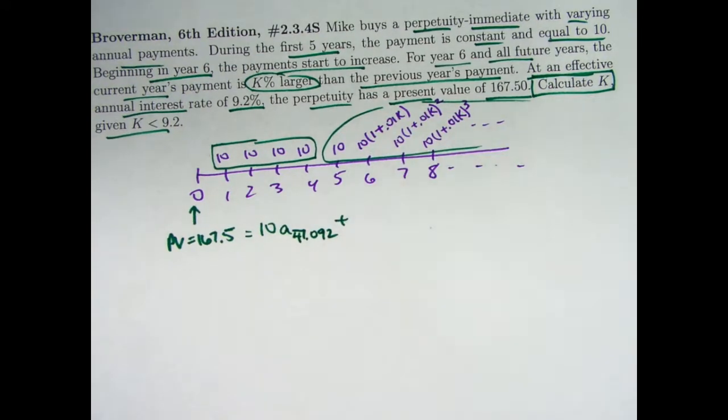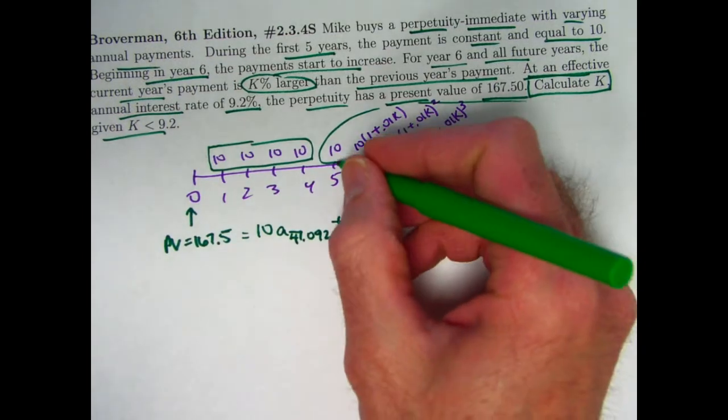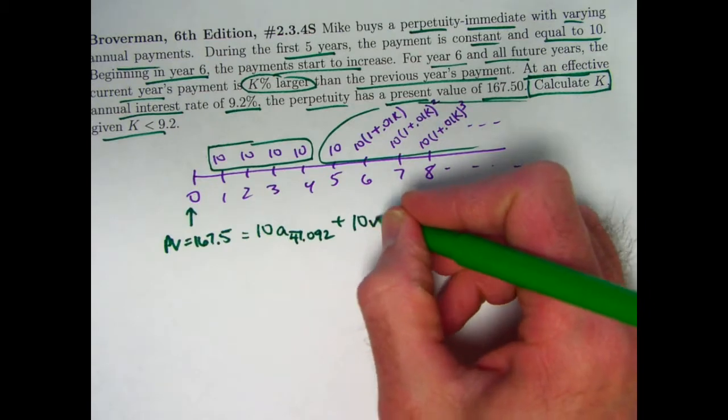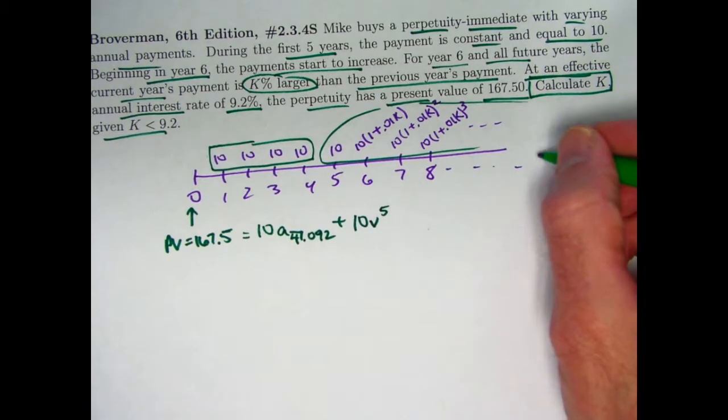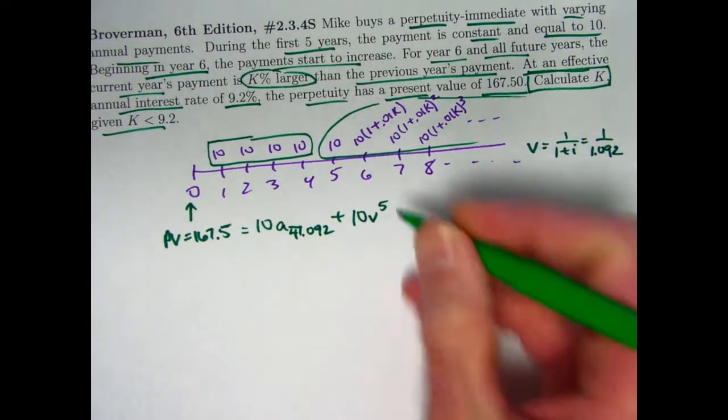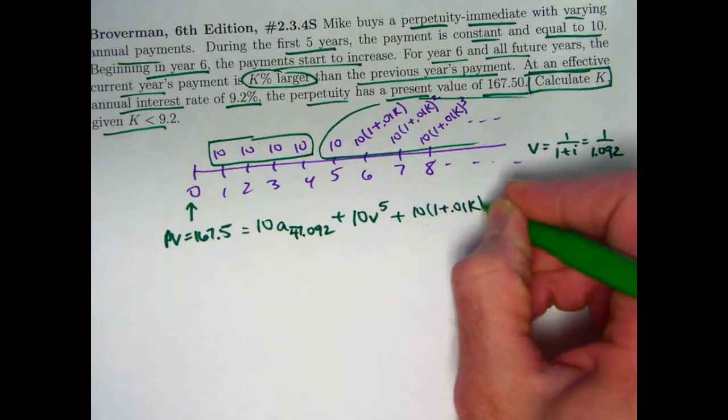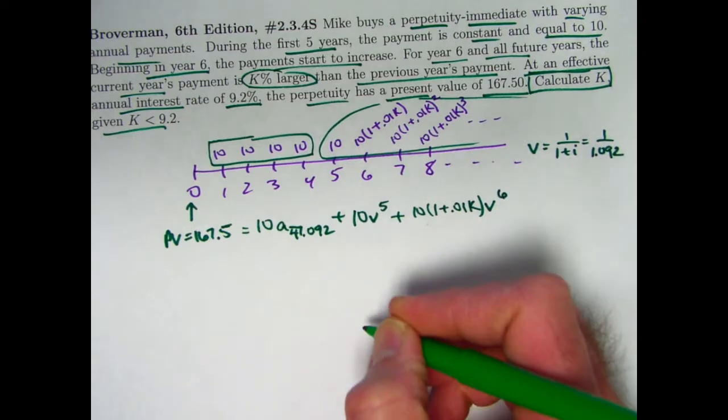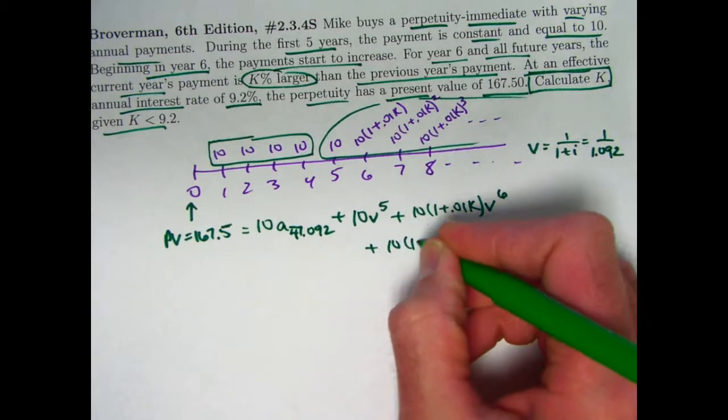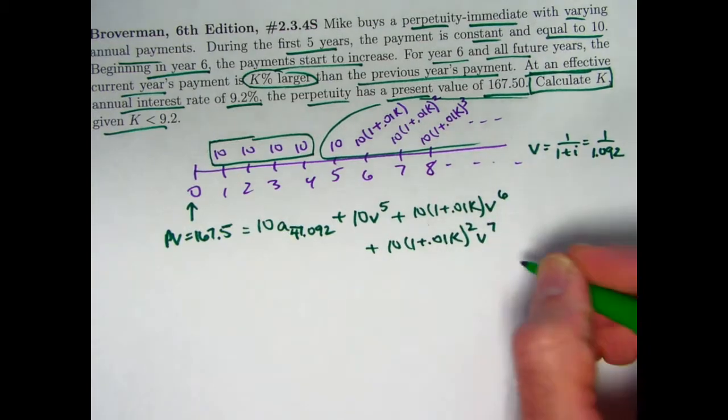Now there is a formula for the present value of what remains, but let's think about it from scratch. Maybe in a future video we'll look at the formula. Take each payment individually here, so we have the ten at time five. That needs to get discounted back to time zero, so I need to multiply it by v to the fifth, where v as usual is the present value discount factor. It's one over one plus i, so in this case that's one over 1.092. The next payment is ten times one plus 0.01k. That needs to go back six years to time zero. I need to multiply it by v to the sixth. The next payment will be ten times one plus 0.01k squared. You need to discount it back seven years, so it gets multiplied by v to the seventh, etc.